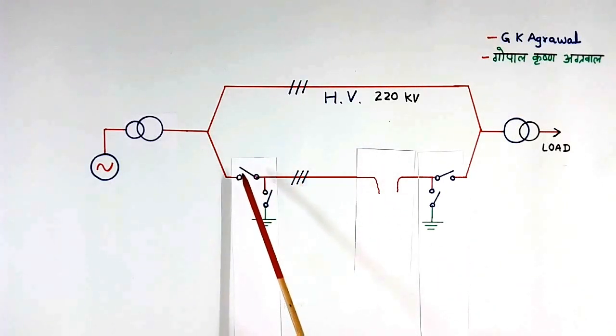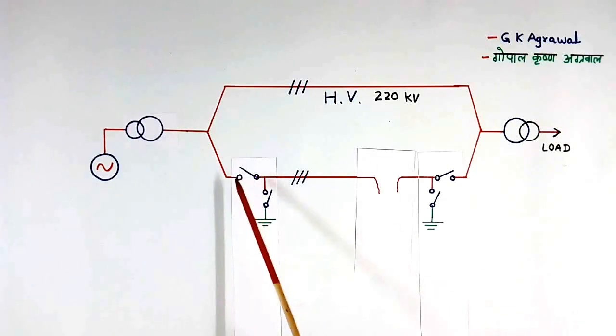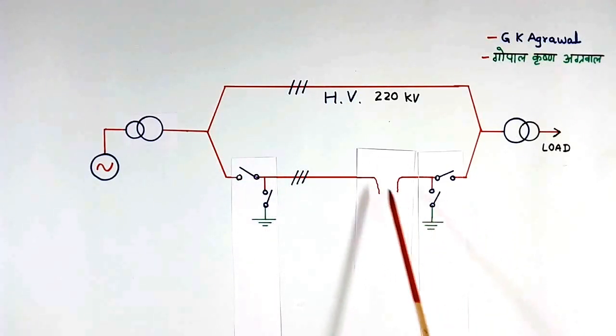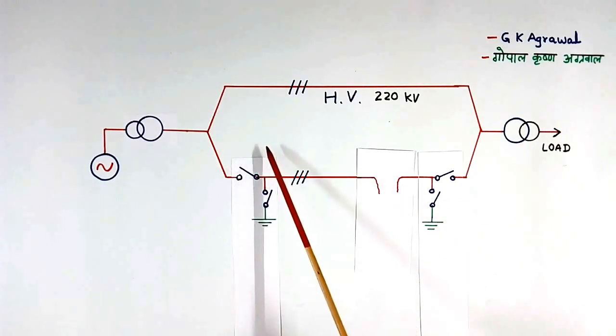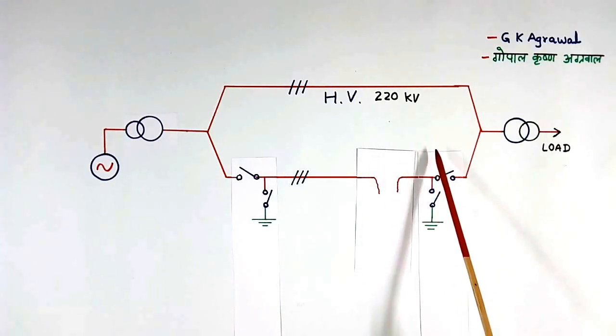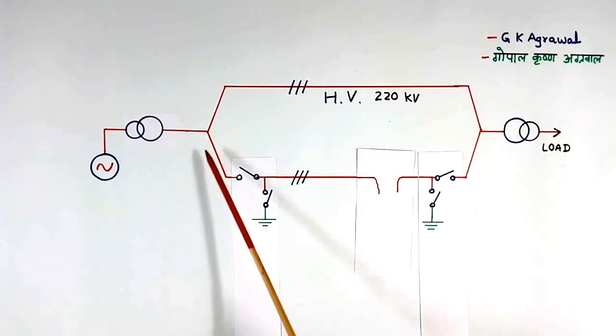These two are breakers and these two are isolators. When problem happens here, what we will do? This breaker and this breaker will be opened. So this line is disconnected from high voltage.